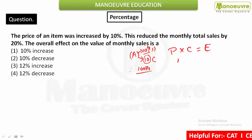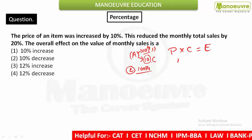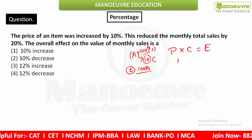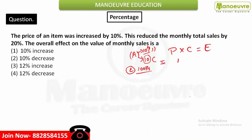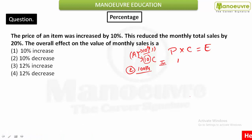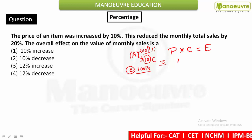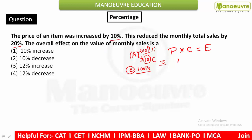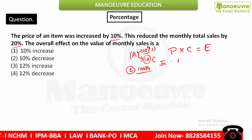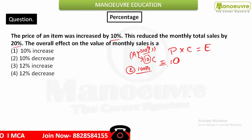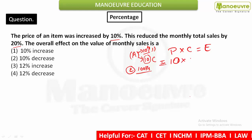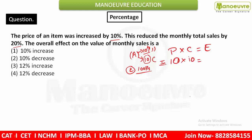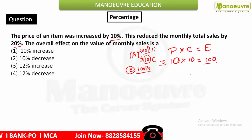Hope the concept of price and expenditure is clear. Now let's come to the question. The price of an item was increased by 10%. We take an initial value — I've considered price = 10 and consumption = 10, giving expenditure = 100. I chose 10 because applying 10% increase or 20% decrease on it is easy. You can take any value.